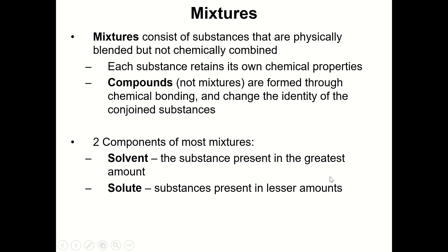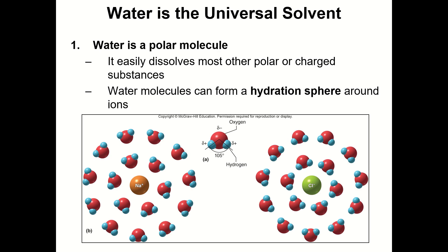Water is the universal solvent, and that's because water is pretty fantastic. Here are a number of characteristics about water that make it great as the solvent within our body's fluids. To begin with, it's polar. Each water molecule has electronegative regions with the oxygen as well as electropositive regions where the hydrogen atoms are. A polar molecule like water is really good at interacting with other polar molecules as well as with anything that is ionized, like a positively charged sodium cation or negatively charged chloride anion.